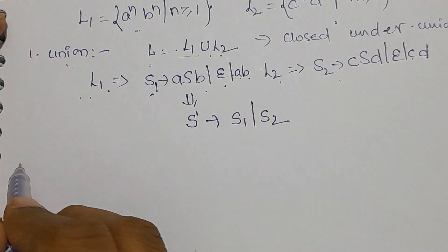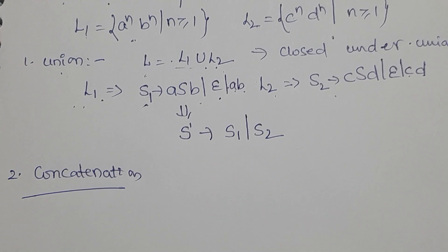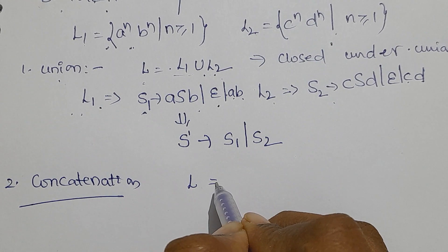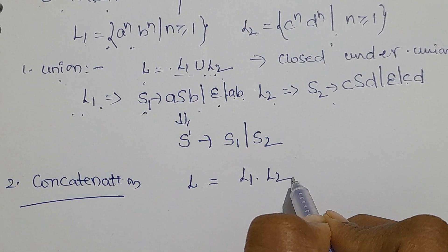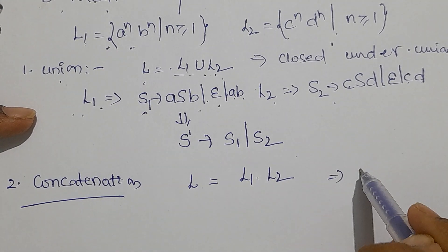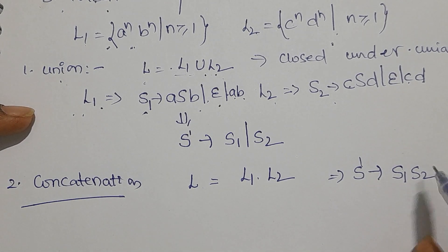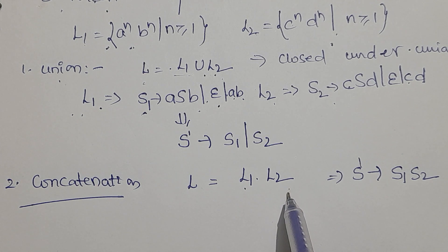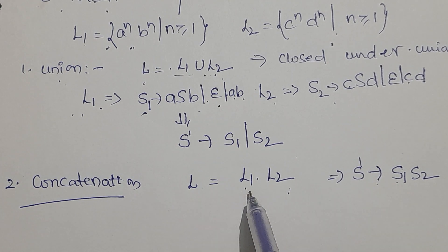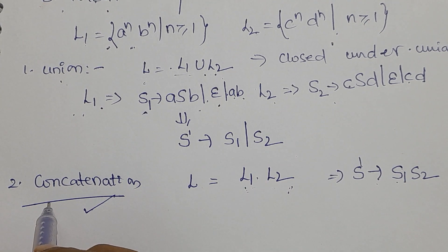The second operation is concatenation. We have considered two languages L1 and L2. The concatenated language L can be represented as L1 concatenated with L2. The grammar for this can be represented as S' → S1 S2, meaning L1 and L2 are individually context-free languages. Hence, the concatenation of these two languages is also closed under concatenation.